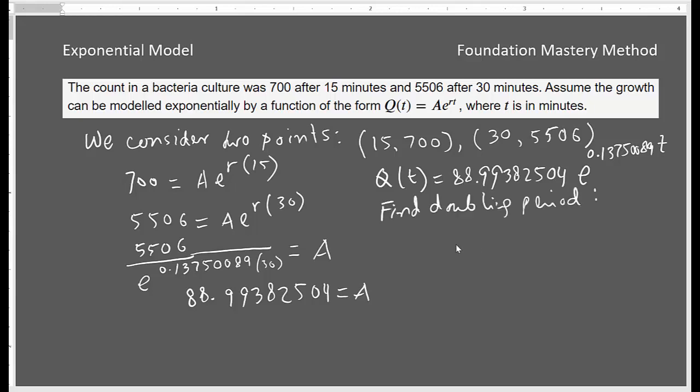So we are looking for doubling period. Doubling period is replace your Q(t) by 2. This will give you the doubling period. And then 2 = 1 · e^(0.13750089t). We need to find our t. So we will do the same way we did before in calculator.